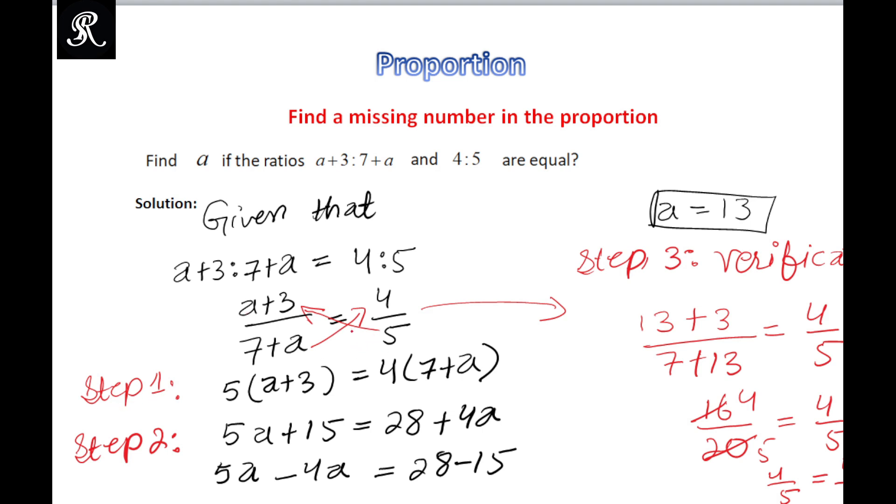Agar aap ne iss ko cross multiply kar lein, to 5 times (a+3) aa jayega aur 4 times (7+a) aa jayega. Cross multiplication ke baad, next step, the second step, aap ne yeh jo equation aa gayi hai, aap ne iss ko unknown variable ke liye solve karna. Jab hum ne simplify kiya to hamare paas a equal to 13 aa gaya.